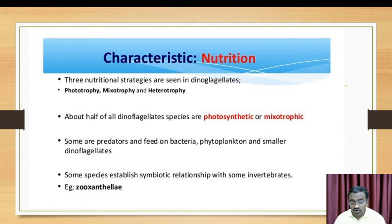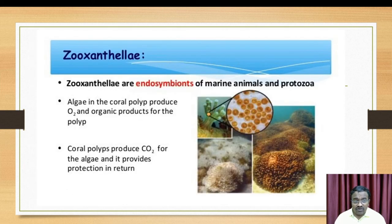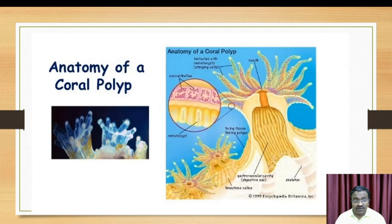The nutrition of dinoflagellates is usually photosynthetic. Some predatory species feed on bacteria, phytoplanktons, and smaller dinoflagellates. Some species establish symbiotic relationships with invertebrates — for example, Zooxanthella, which are endosymbiotic marine animals and protozoans present on coral reefs. Coral polyps produce carbon dioxide for the algae, which in return provides protection.